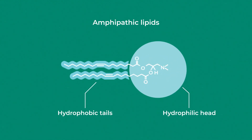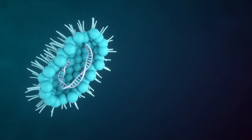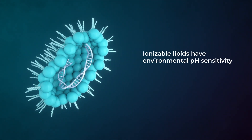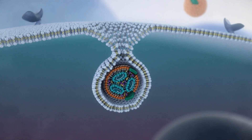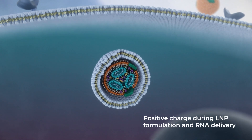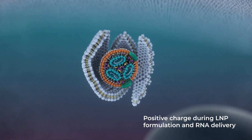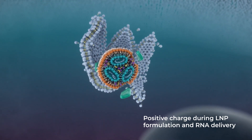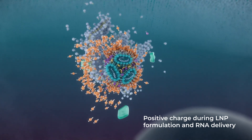The unique value of ionizable lipids is their environmental pH sensitivity. They hold a neutral charge at physiological pH to minimize toxicity, and shift charge under acidic pH to enable RNA binding during formulation and endosomal escape during delivery.